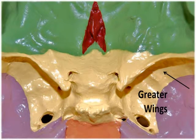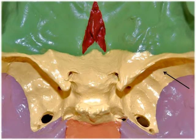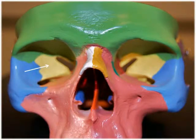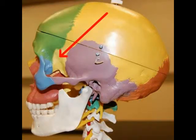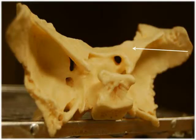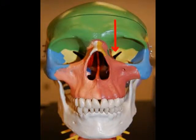The greater wings are the large lateral projections extending out from the body. They form the anterolateral floor of the cranium as well as part of the lateral wall of the skull just anterior to the temporal bone. The lesser wings are the small bony ridges located anterior and superior to the greater wings. These form part of the cranial floor as well as the posterior orbit.